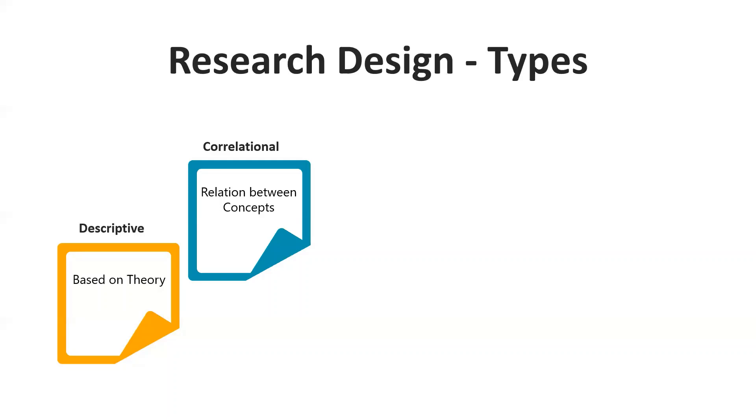The second one in research design is the correlational. As the name suggests, it is helpful for arriving at relationship between the two concepts which are very near, or variables. It helps the researcher to establish a set of relationships and requires at least two data sets, and it is mostly used in case control studies.